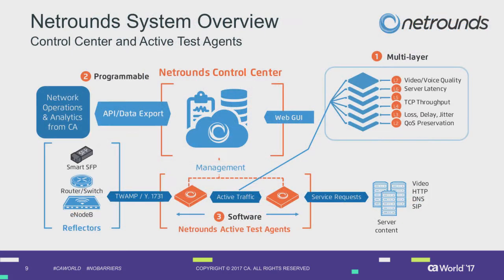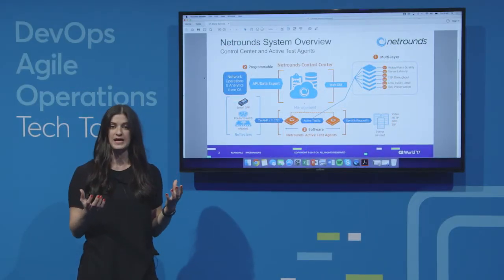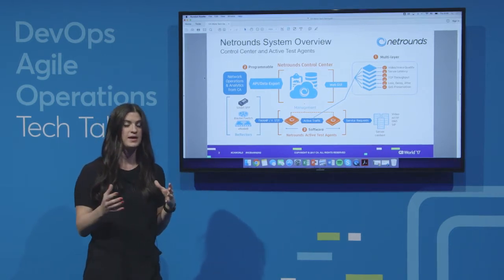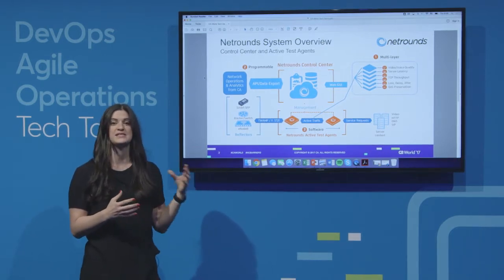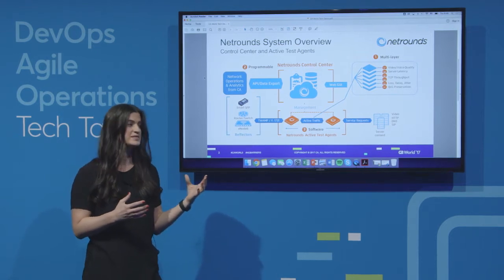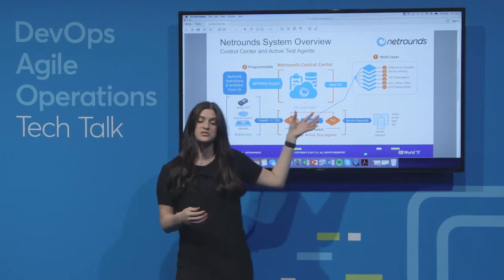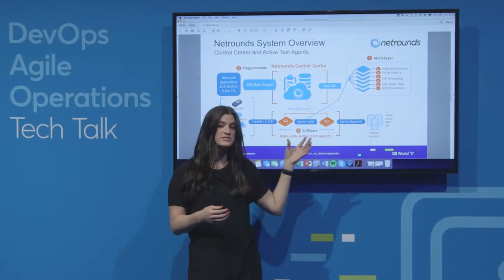Here's a quick overview of what the NetRounds Platform actually looks like. It's made up of two components: the test agents that are out in your network, depending on your use case and network topology, and the NetRounds Control Center. The NetRounds Control Center is a test results and analysis module sitting in the cloud or on-premise in a private cloud. This is where you build your tests, see your real-time monitoring metrics, and have visibility into how your network service is performing.